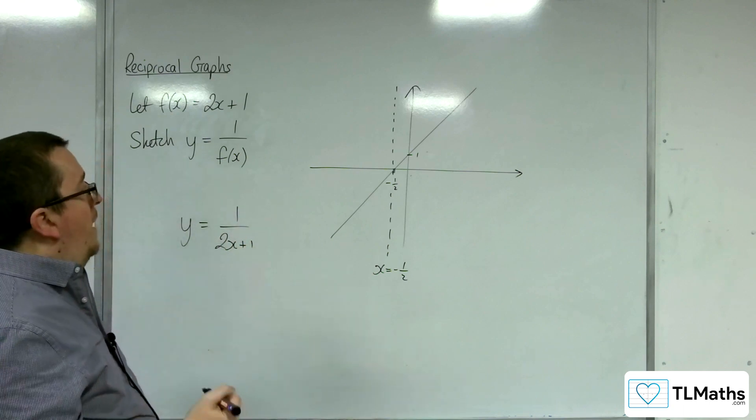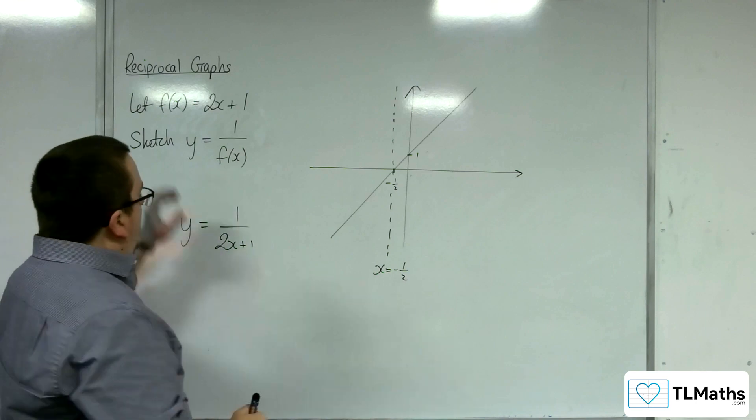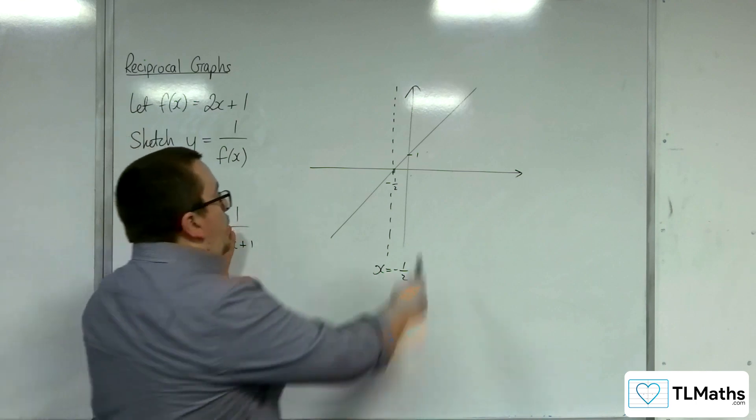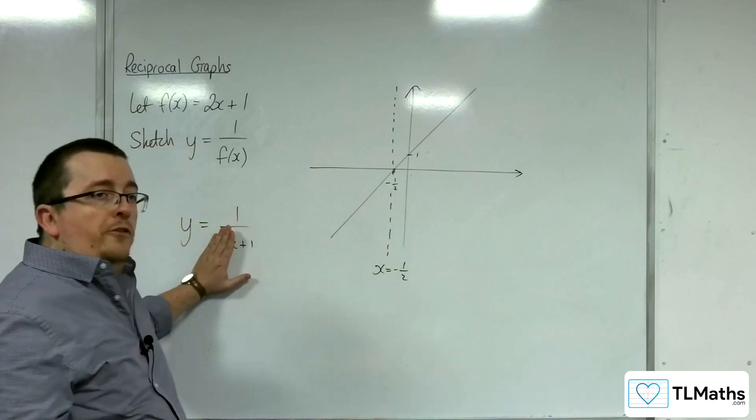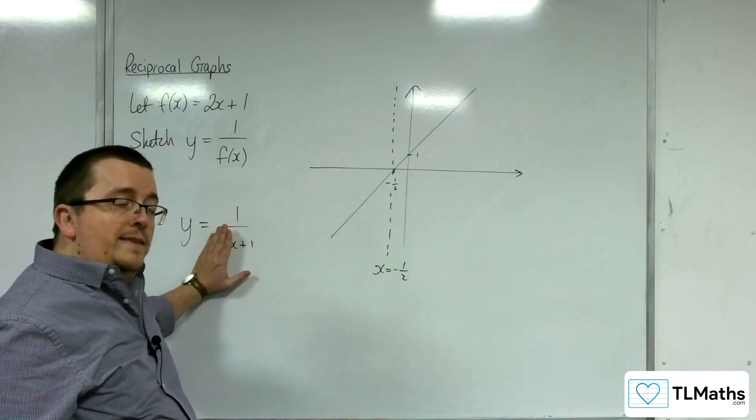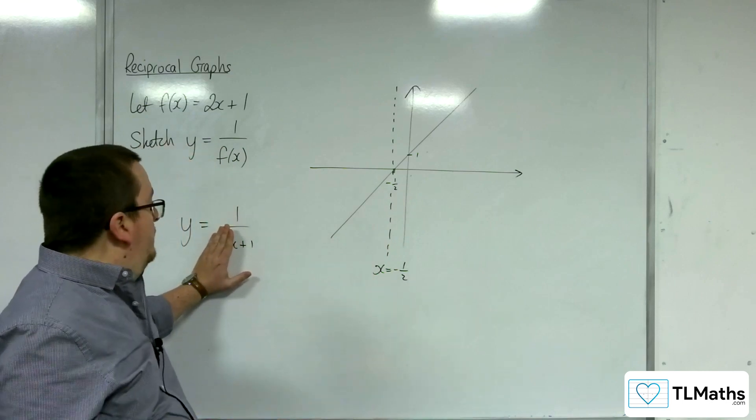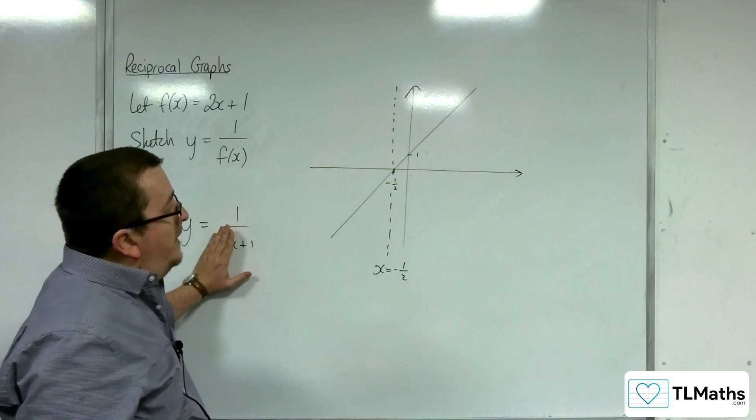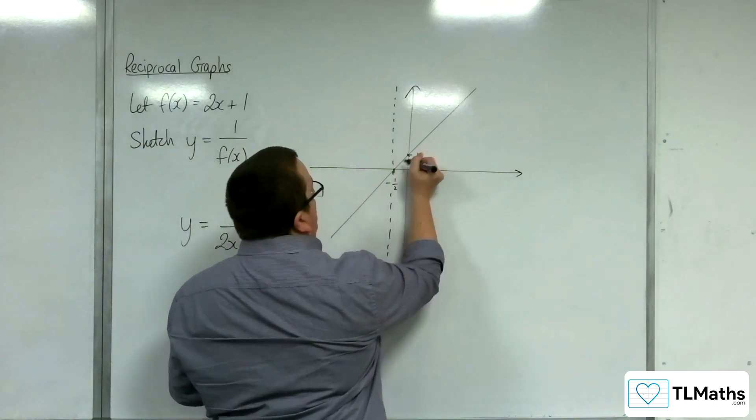Well, when you've got x is 0, you're going to have 1 over whatever that value is, where the original function was crossing the y-axis. So you've got 1 over 1 in this case. So we know that the curve has got to go through that point.